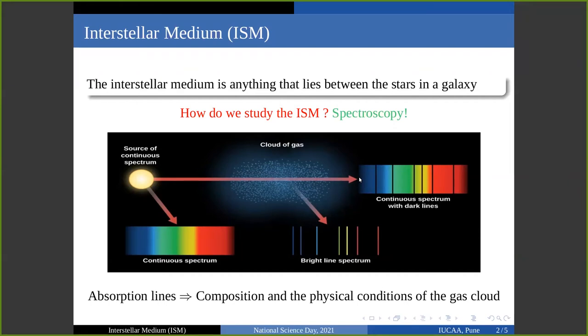These absorption lines can reveal a great deal of information about the intervening cloud of gas, like the composition and their physical state, including temperature and density.